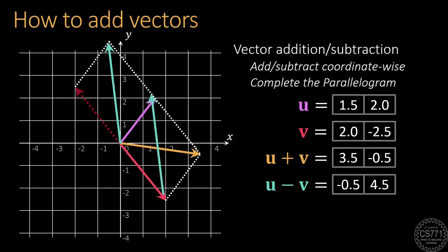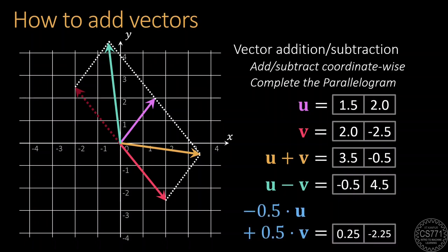Notice that this new vector u minus v, when shifted properly, will start at the vector v and end at the vector u. The same trick works when taking more fancy combinations of the two vectors. First, scale or flip the two vectors appropriately and then we simply use the parallelogram law or the coordinate-wise addition law to add them.